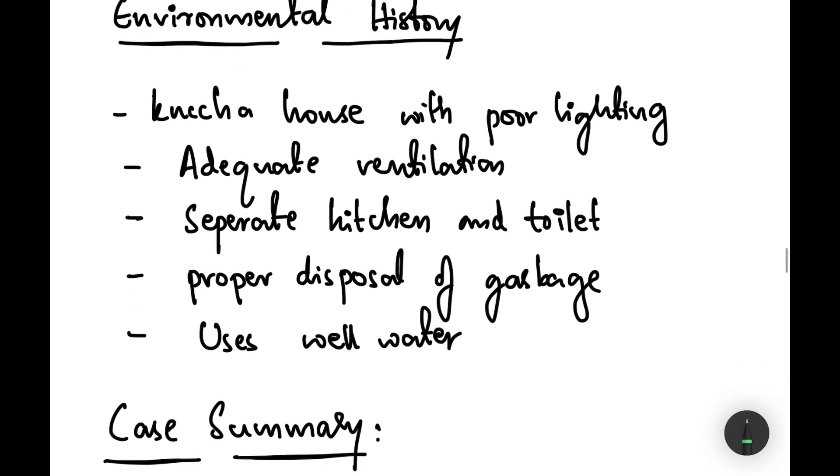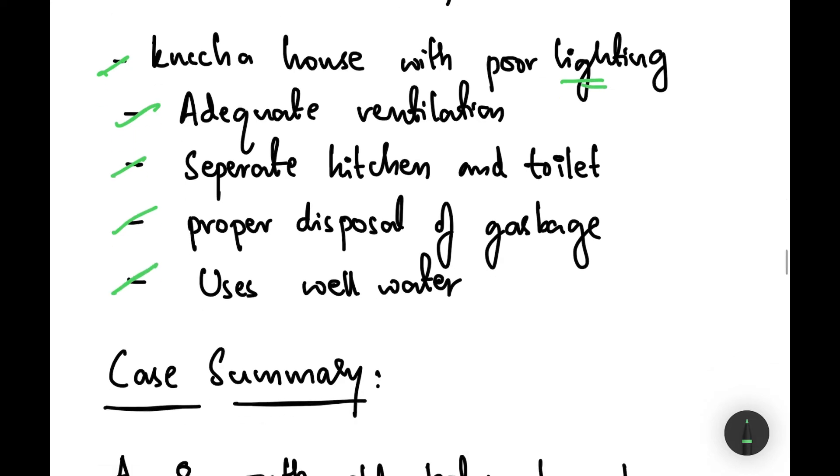Moving on to the environmental history, they live in kaccha house with poor lighting. There is adequate ventilation, there is separate kitchen and toilet, there is proper disposal of garbage, and they use well water for their daily purposes.